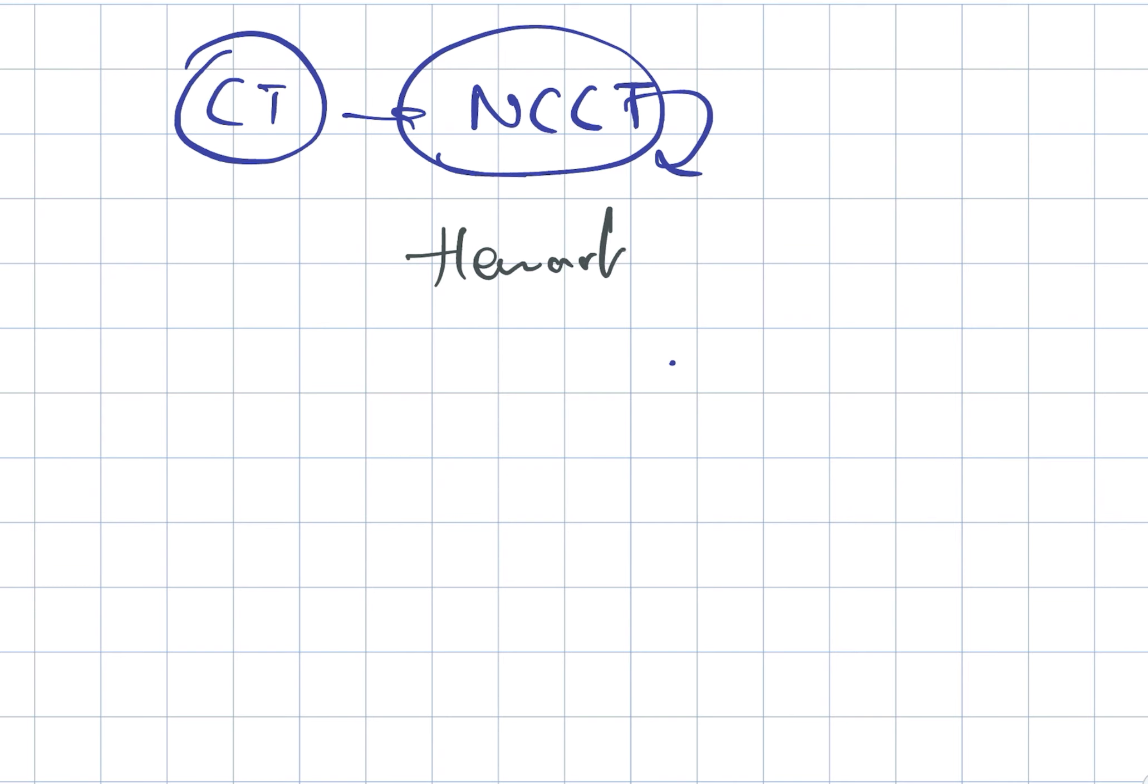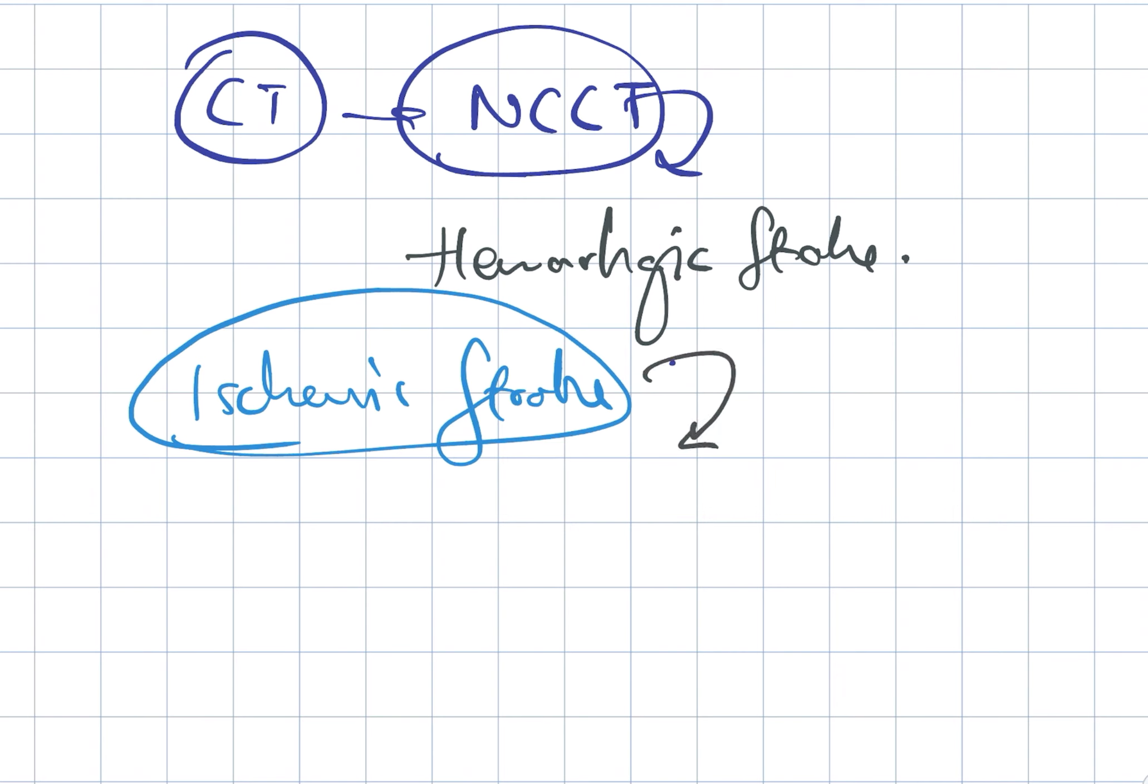Looking at ischemic stroke, it is used to check the diffusion-weighted MRI. With the diffusion-weighted MRI, the ischemic stroke is detected.